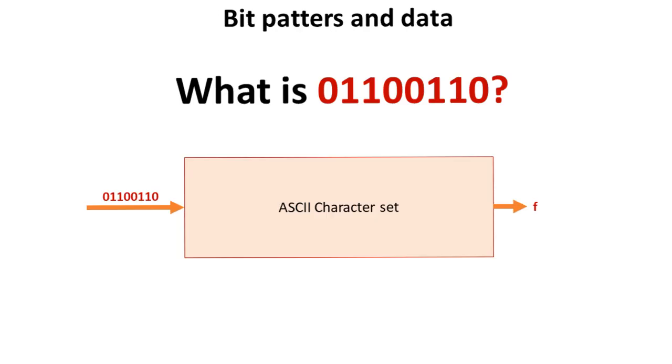For example, if we fed the electrical signal 01100110 and passed it through the ASCII character coding set, out would pop the lower case letter F.